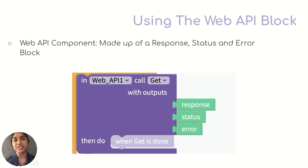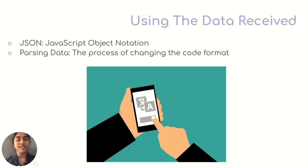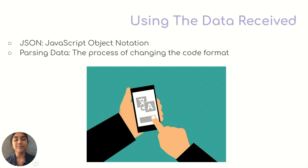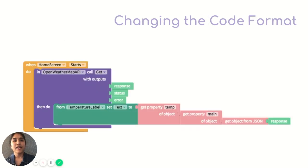At this point you'll have all the data that you need, but before you can use it, you need to change its format. The format that the data comes in from the website is JSON format. JSON stands for JavaScript Object Notation. Basically, the code is in a specific format, and for our app to understand it, we need to change it into another format — think of it as translation. JSON is the language that the website uses, and you need to translate it into a language that your app can read. This process of changing the code format is a computer science term called parsing data. We'll be taking this code that's in JSON format and changing it into another format called object format. Doing this is quite simple — you'll need the blocks in the object drawer.